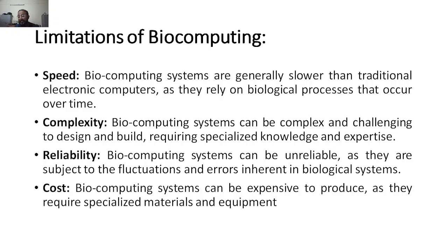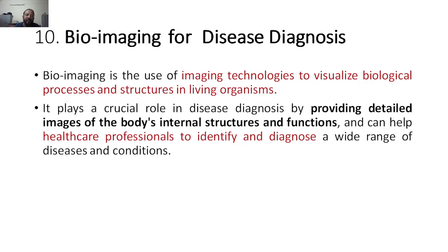Reliability is also a limitation — bio computing systems can be unreliable as of now, because they are subject to fluctuations and errors inherent in biological systems. If there are any damages in the cells being used, it may produce inherent errors. Next is cost — bio computing systems can be expensive to produce, as they require specialized materials and equipment to keep the cells alive and carry out the biological processes needed to generate useful signals.